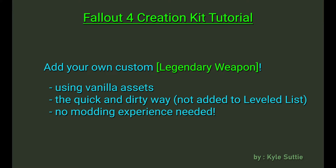Hello, my name is Kyle Suttie, and today I'm going to show you a quick tutorial in the Fallout 4 Creation Kit on how to add your own weapon to the game, make it customized, and add your own stats or change some assets. These will be using vanilla assets, although you can add your own assets, but that won't be covered today. This is the quick and dirty way. We're not going to add it to the leveled list — we're just going to drop it in the game ourselves. No modding experience needed.